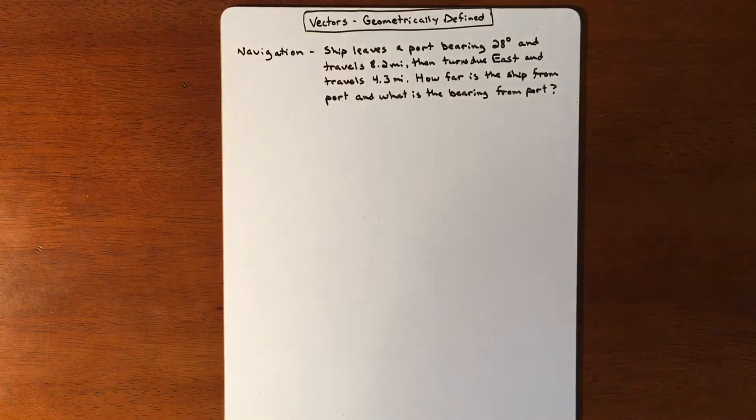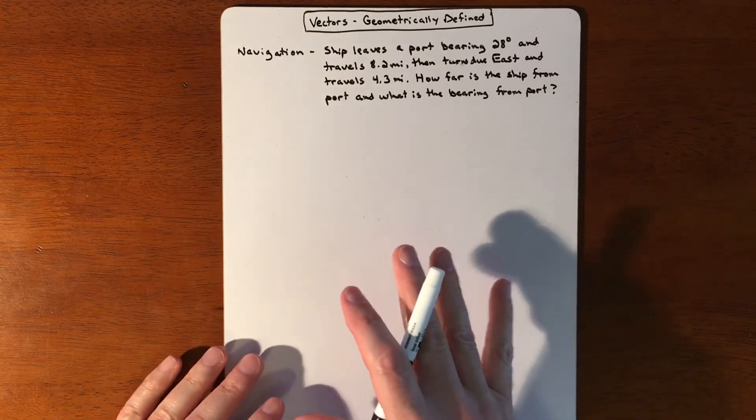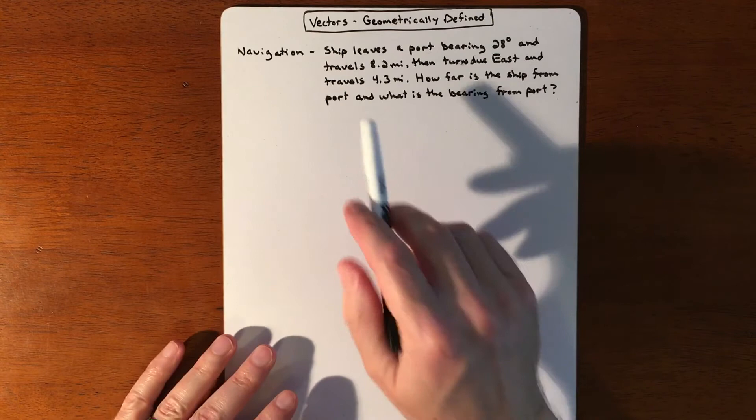In this example we're going to be talking about vectors and basically drawing some pictures and trying to figure out some measurements in this picture. The picture is going to be everything, so that's going to be the most challenging part, and then we'll try and do some math on it.